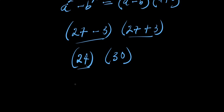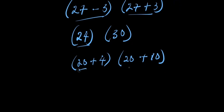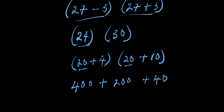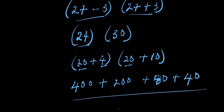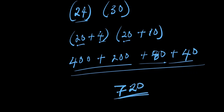So we have 24 times 30. We can write this as 20 plus 4 times 20 plus 10. Multiplying out: 20 times 20 is 400, plus 20 times 10 is 200, plus 4 times 20 is 80, plus 4 times 10 is 40. Adding together: 400 plus 200 is 600, plus 80 is 680, plus 40 is 720. So 24 times 30 equals 720.